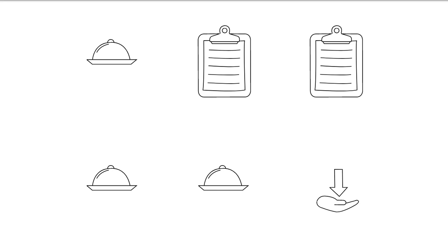How are collection objects sorted in Java? Sorting in Java collections is implemented by the Comparable and Comparator interfaces. When the Collections.sort() method is used, the elements get sorted based on their natural order.